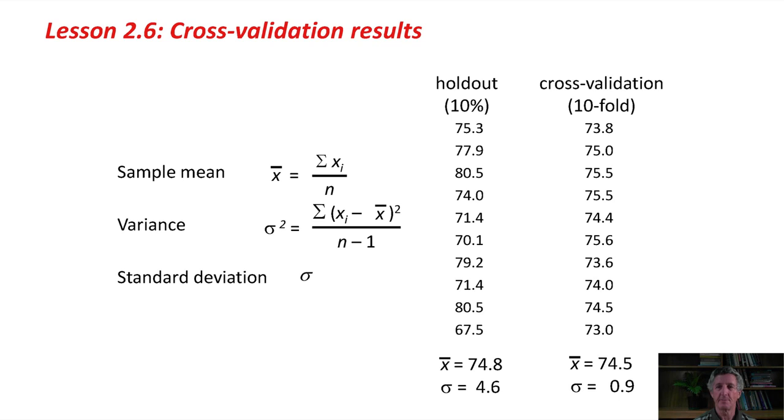Before we used these formulas for the holdout method, we repeated the holdout 10 times. These are the results you get on this dataset if you repeat holdout. That is, using 90% for training and 10% for testing, which is, of course, what we're doing with cross-validation, 10-fold cross-validation. I would get those results there. If I average those, I get a mean of 74.8, which is satisfactorily close to 74.5. I get a larger standard deviation, quite a lot larger standard deviation of 4.5, 4.6, as opposed to 0.9 with cross-validation.